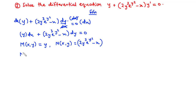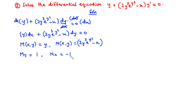Next, let's find the partial derivative of M with respect to y. Differentiating y with respect to y gives 1. Then we find the partial derivative of N with respect to x. The term 2y³ e to the power y² is constant with respect to x, giving 0, and differentiating negative x with respect to x gives negative 1. So Nx equals negative 1. Since My is not equal to Nx, the differential equation is non-exact.